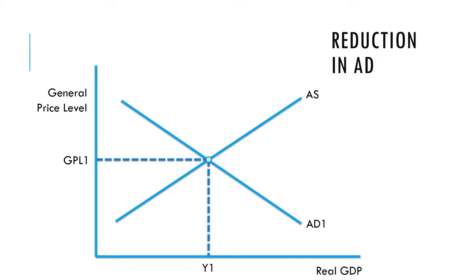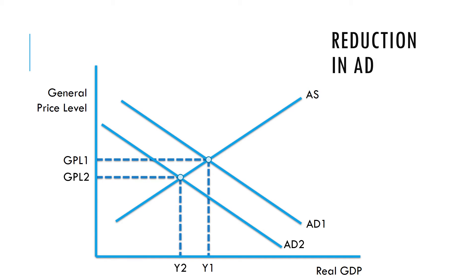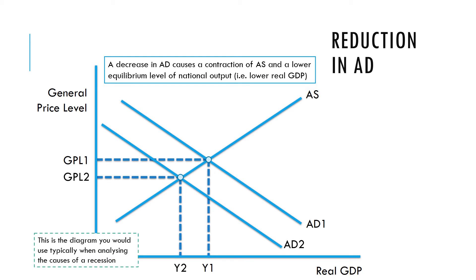A reduction in aggregate demand would work in the opposite direction — leading to a lower price level and a lower level of national income Y2. A decrease in AD causes a contraction along the AS curve and a lower equilibrium national output. This is the diagram we typically use to illustrate the cause of a recession: a demand-deficient recession is indicated by a fall in GDP from Y1 to Y2, often accompanied by deflation.